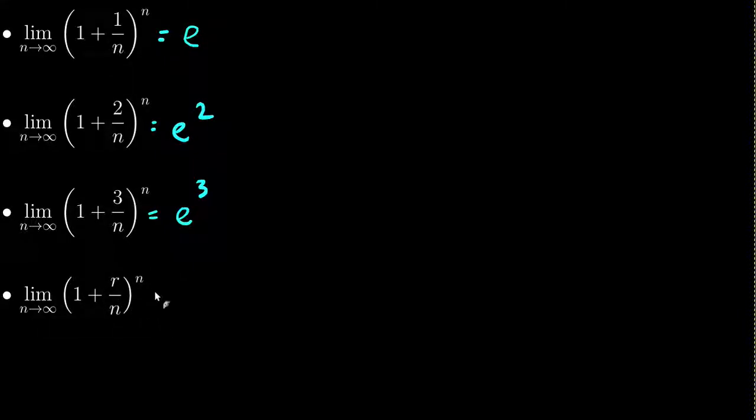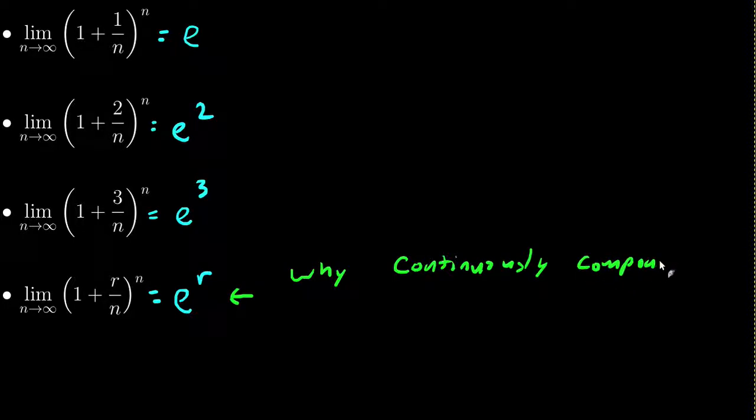And we have this thing: 1 plus r over n to the n is equal to e to the r. I'm not going to get into this much, but this is why we have the continuous compounding formula. So continuously compounded would give me A equals P e to the r t, because as I compound any interest rate infinitely many times per time unit, I tend towards e to the r.